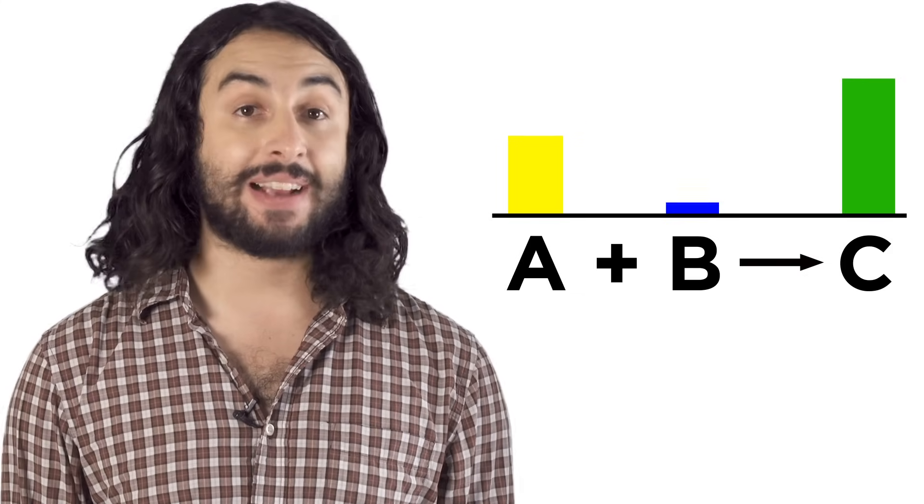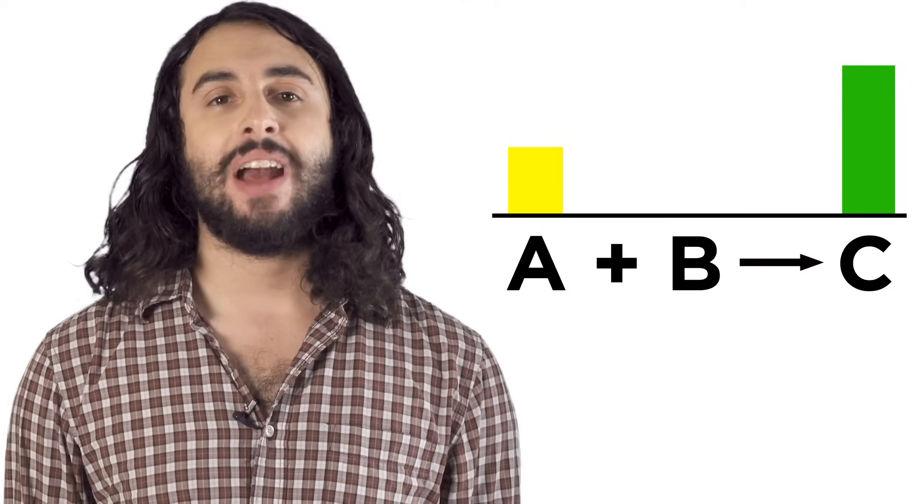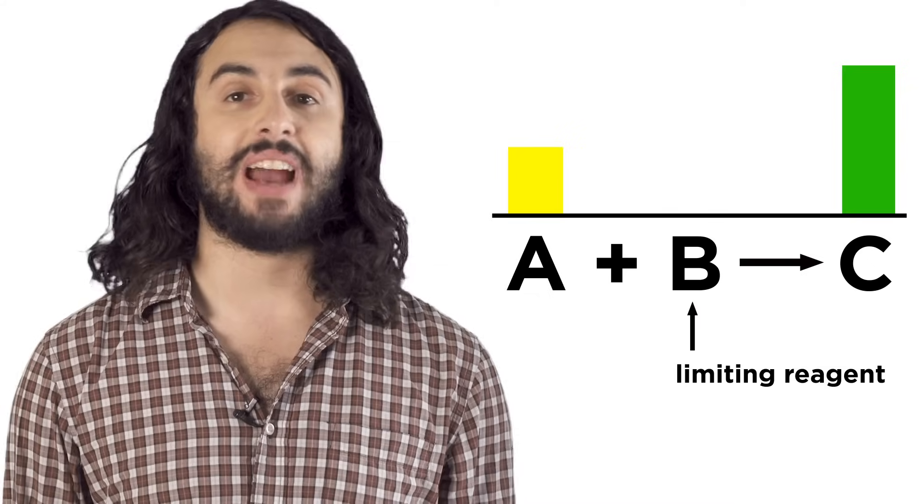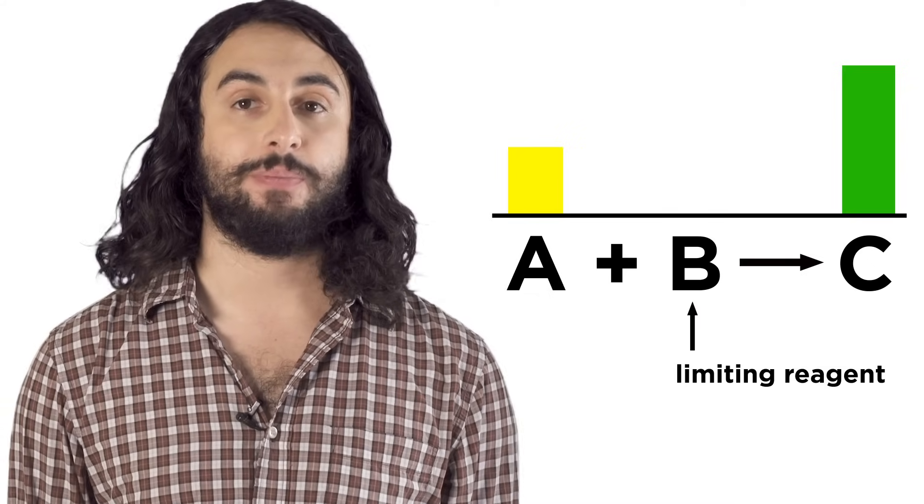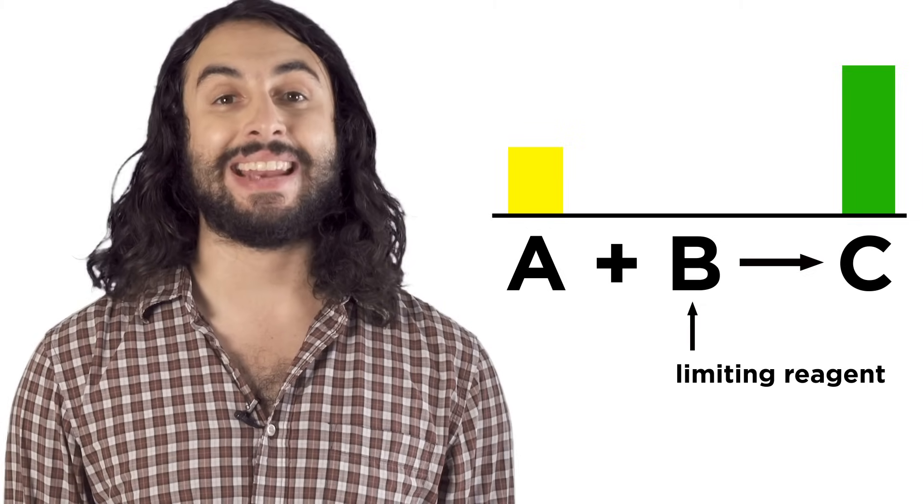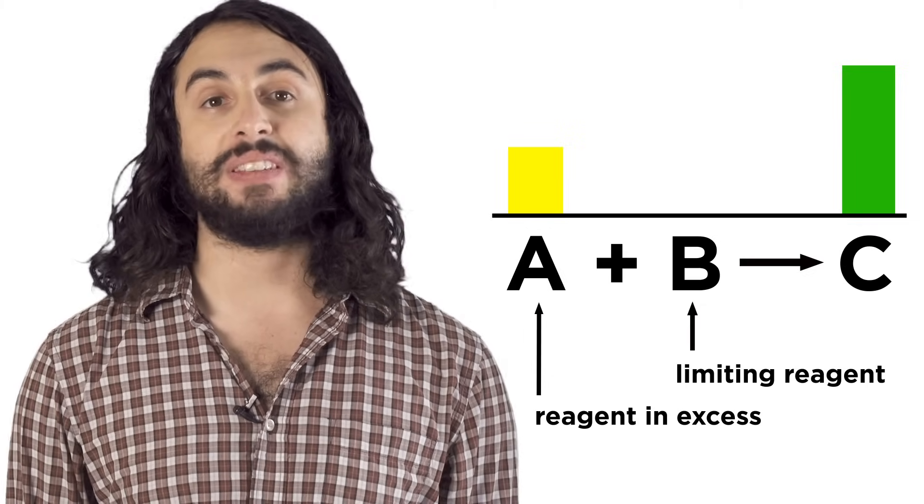One of them will be the reagent in excess and one of them will be the limiting reagent. The limiting reagent is the one that runs out first, which makes reacting further impossible. The other reagent or reagents will then be said to be in excess because there will be some left over.